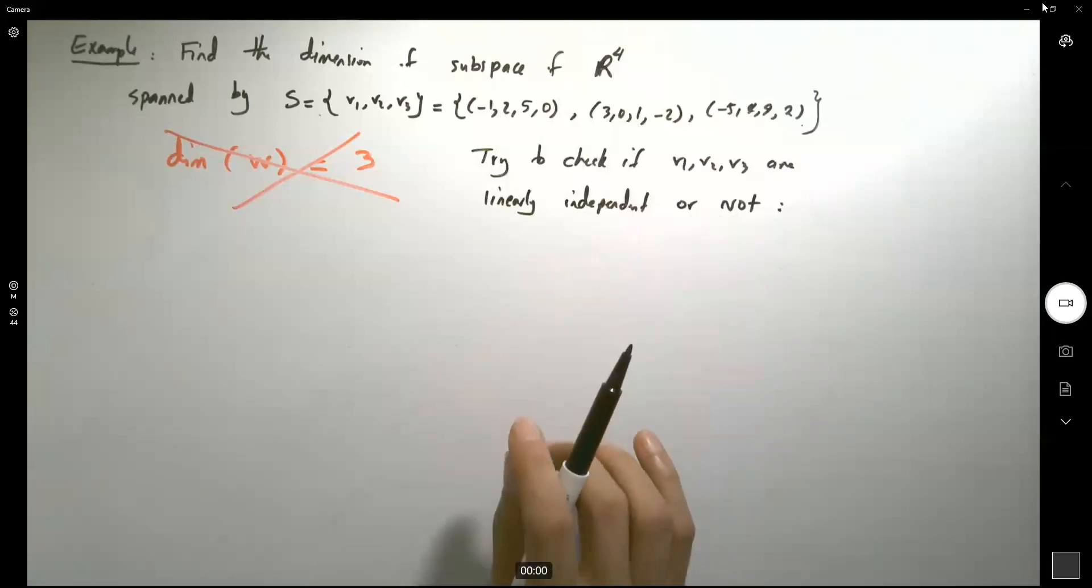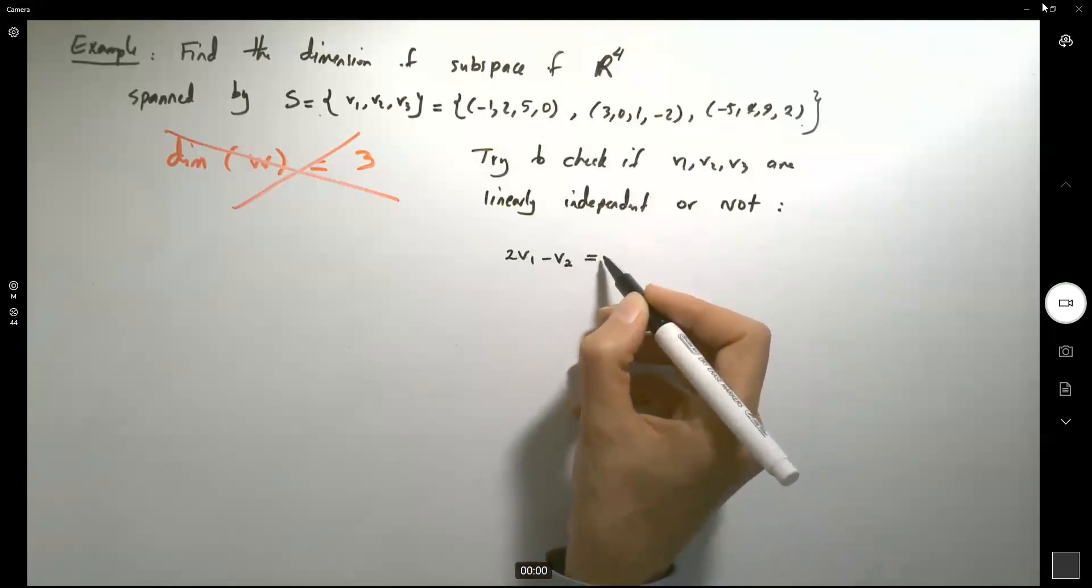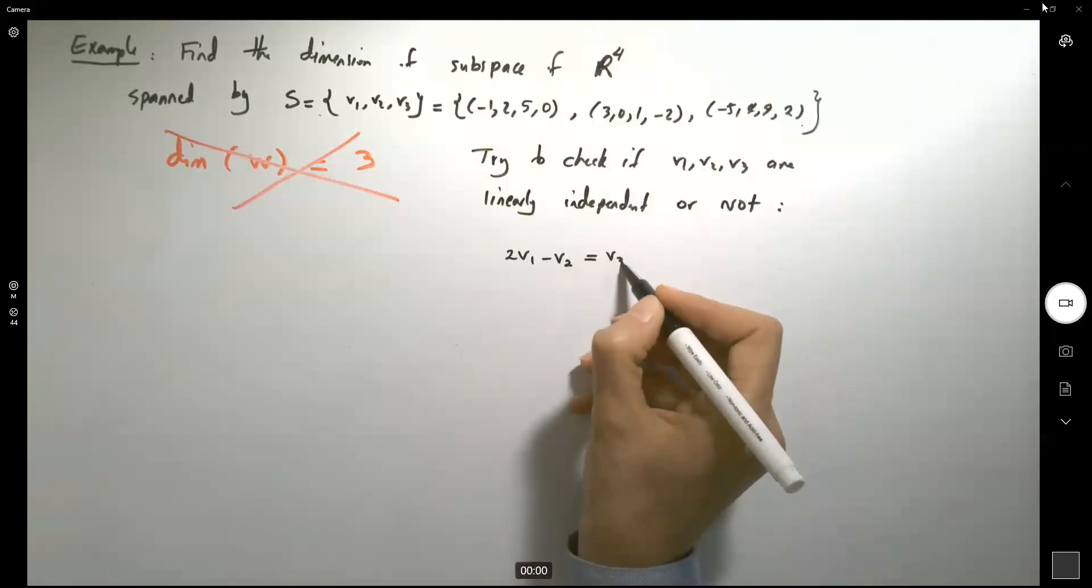Without applying any techniques, just looking at these elements, trying to investigate, if we multiply v1 by 2 and subtract v2 from it, we get v3, the third vector.